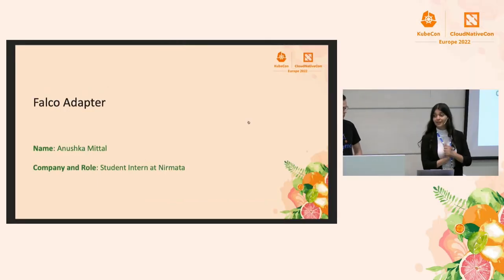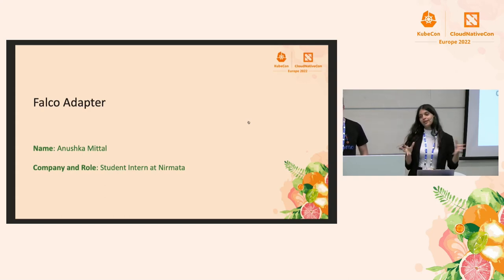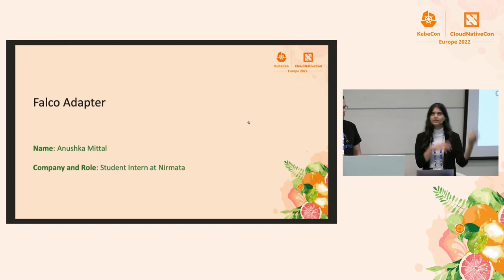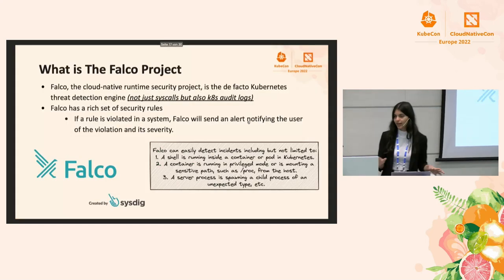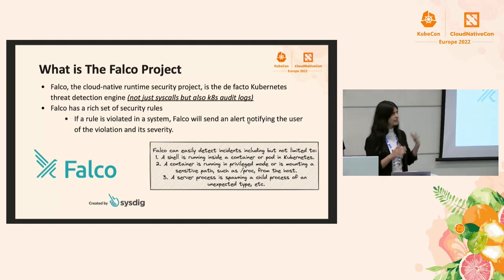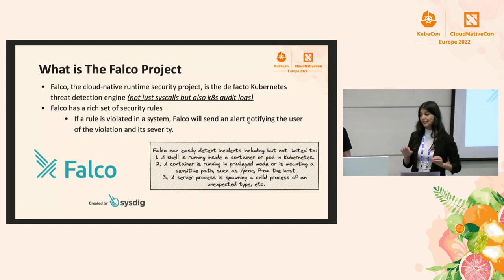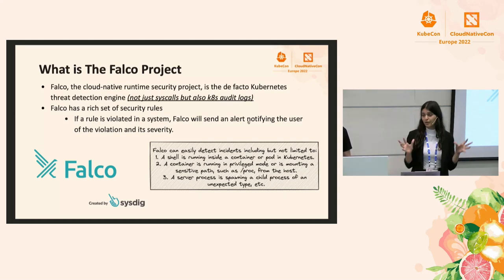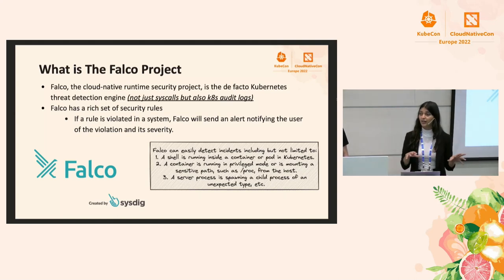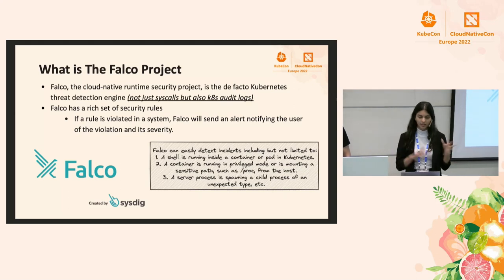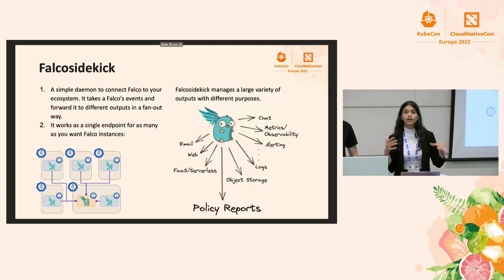With that, we can move on to the Falco adapter. For the next part of the presentation, we'll be looking at the Falco adapter that was built last year. It was just released in Falco Sidekick 2.25. The Falco project is an incubating CNCF runtime security tool — the de facto Kubernetes threat detection engine. It acts like a security camera that looks for and detects any data theft, intrusions, or unexpected behavior. To detect this, Falco has a certain set of rules that are extensive and built for Kubernetes, Linux, and cloud native.